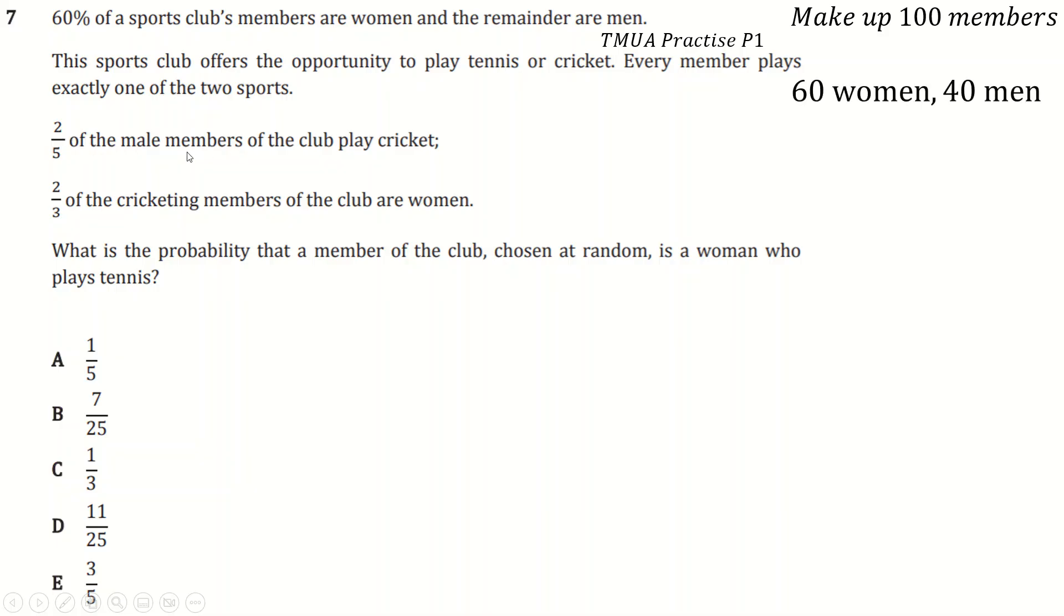Two-fifths of the men play cricket, so two-fifths of that, I believe, is 16. So 16 men play cricket. Two-thirds of the cricketing members are women, so that means one-third are men, so that's one-third of the cricketers, times it by three to get the total cricketers, 42, and then take away the men, or just times this by two to get two-thirds, it's 32.